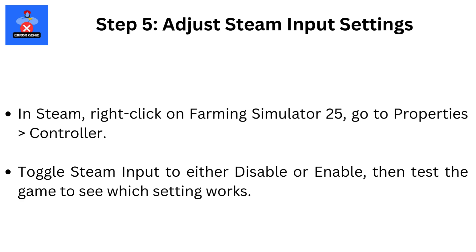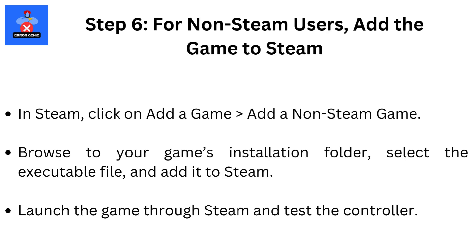Step 6: For non-Steam users, add the game to Steam. In Steam, click on Add a Game, then Add a Non-Steam Game. Browse to your game's installation folder, select the executable file, and add it to Steam.